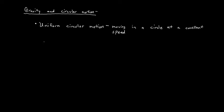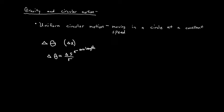Let's turn to discussing the concept of gravity and circular motion. We'll start with uniform circular motion, which is simply moving in a circle at a constant speed. There are quantities we can use to study this. The first is change in angle, change in theta, which is analogous to change in position in linear motion. Change in theta is defined as change in arc length s divided by radius r.